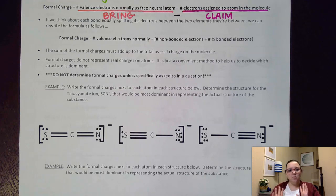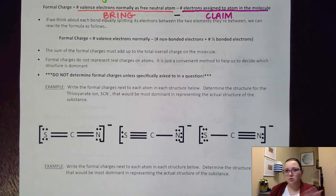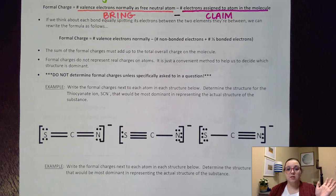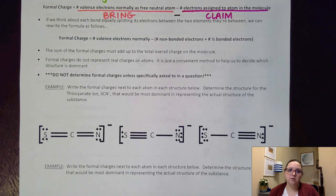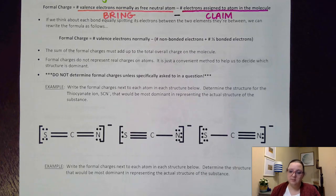Keep in mind, we don't normally have to calculate formal charge to pick a best structure. If you're drawing a Lewis dot structure, you just use all the normal tools and rules. We only have to double-check a structure with formal charge when we're specifically asked to do so — don't panic about doing this on every structure. This is a once-in-a-blue-moon situation.